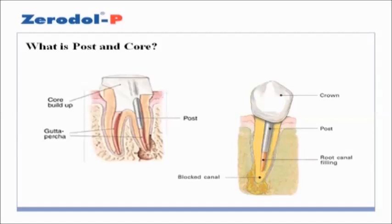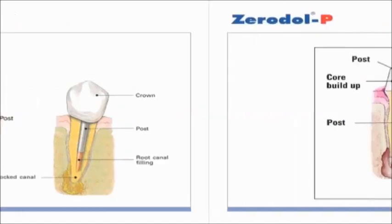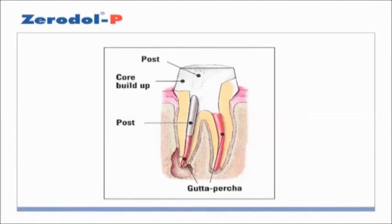What is a post and core? A post and core is a dental restoration which is used to sufficiently restore tooth morphology, followed by future restoration such as a crown, when there is inadequate tooth available due to loss of tooth structure as a result of decay, fracture or other causes. Posts and cores can be referred to as one of the foundation restorations.